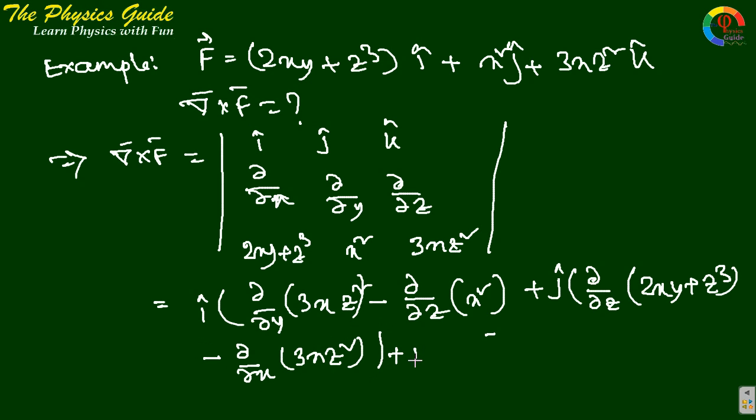Last term k cap: del/del x of x² minus del/del y of (2xy + z³).